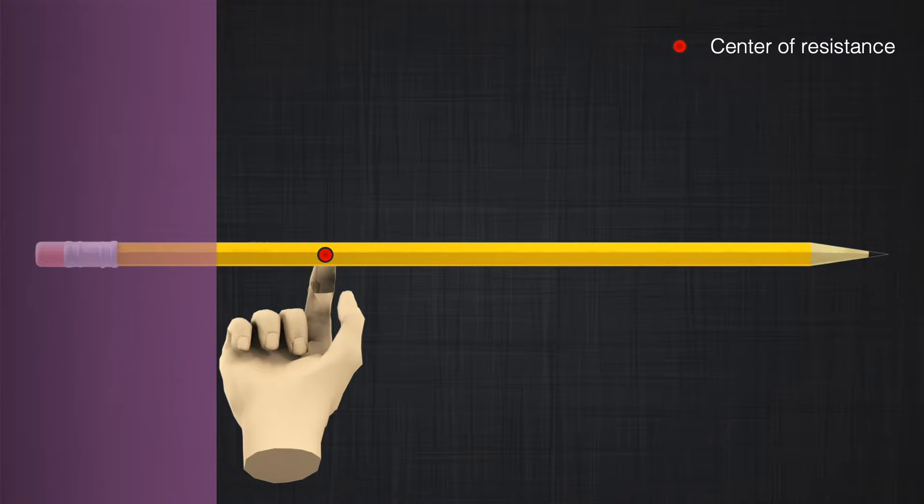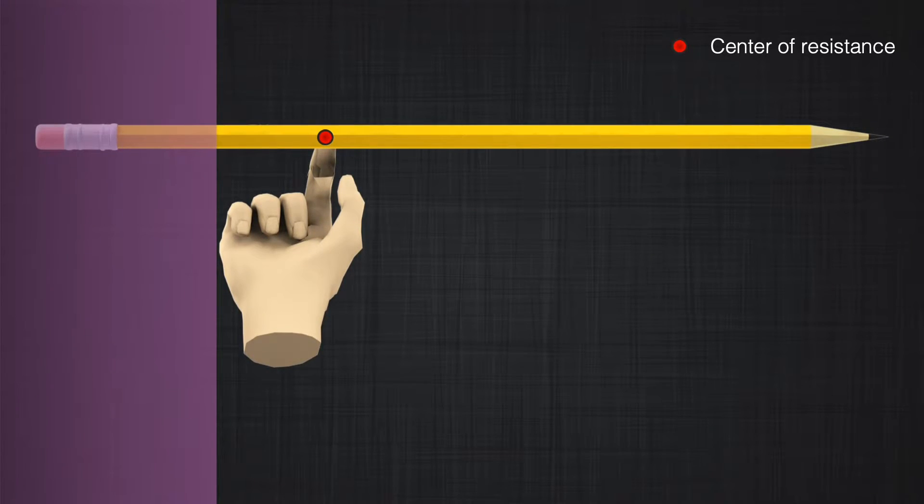If you decided to move the pencil straight upward, you need to move your finger slightly closer to the wax. It seems the center of gravity has changed when we restrain the object. Therefore, let's not call it center of gravity anymore — we will call it center of resistance. Center of resistance is a point where, when the object is restrained, application of force at that point will cause the pencil to move straight upward.